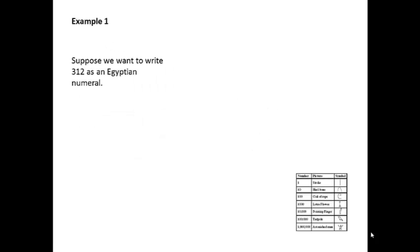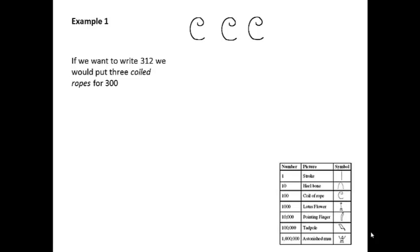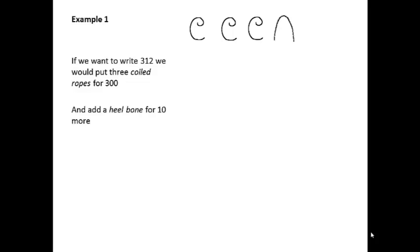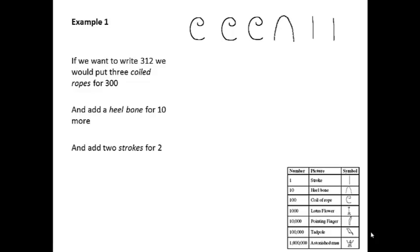Now we're going to do some examples. I would suggest that you stop at this point and try to do the example yourself and then see if I have it right. So we want to write three hundred and twelve as an Egyptian numeral. For three hundred we'll put in three coils of rope at a hundred each, a heel bone is ten, and then there will be two strokes for the two.